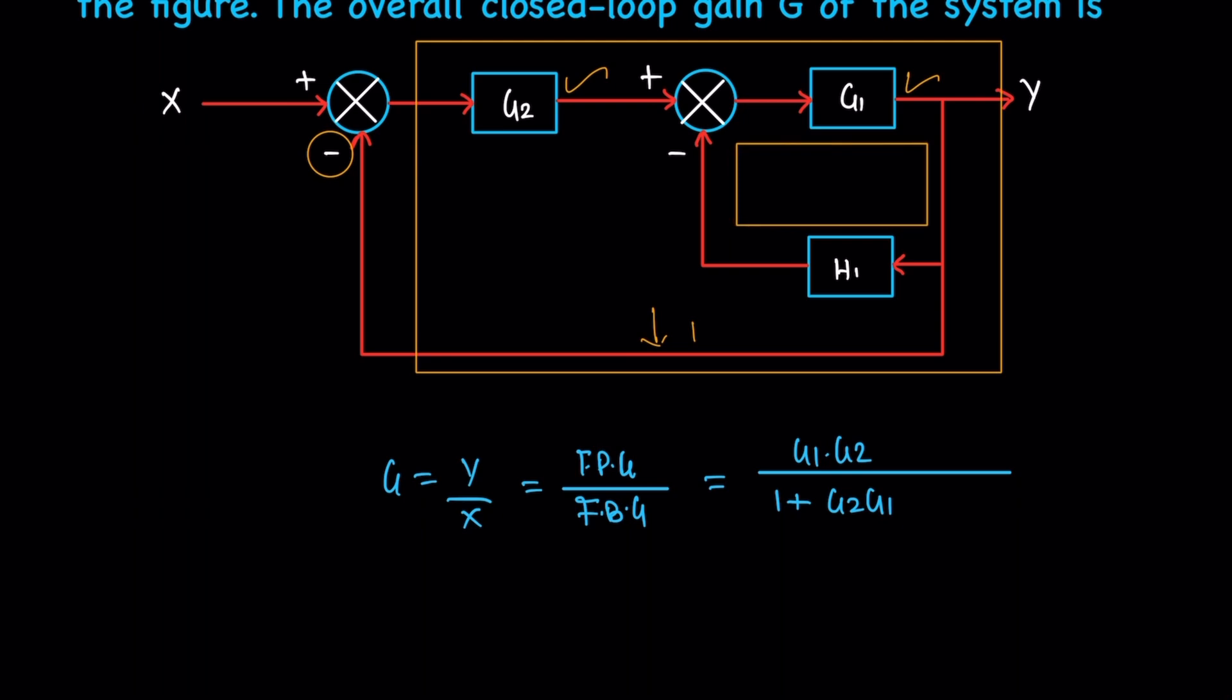Here the product is G1 and H1. This is also negative feedback, so the result is positive: plus G1 H1.